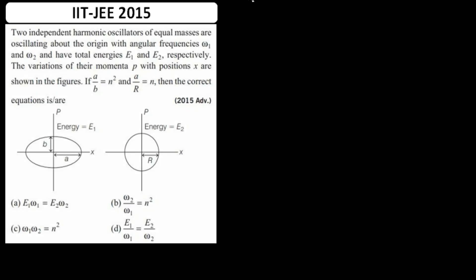Let's look at this question from IIT JEE Advanced 2015 — a very good question on simple harmonic motion. It involves the concept of a phase space diagram. The question states: two independent harmonic oscillators of the same mass, oscillating about the origin with angular frequencies ω₁ and ω₂ and total energies E₁ and E₂ respectively. Based on all given information, we have to pick the correct options in this multiple choice question.